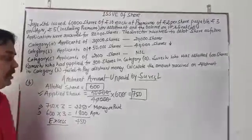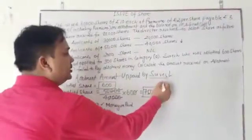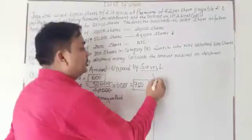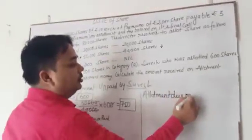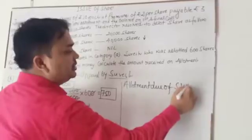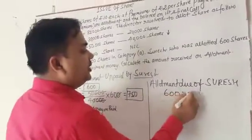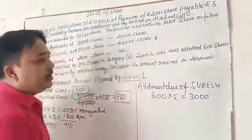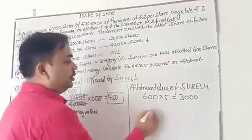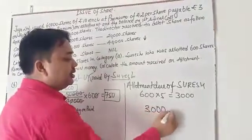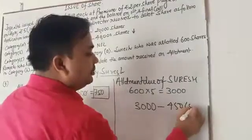Now you have to calculate the allotment amount due for Suresh. Simply: 600 multiplied by 5 equals 2,000 — that is the allotment amount due. You got 2,250 paid and 1,800 utilized, so excess is 450. To calculate the unpaid amount, you subtract: allotment due 2,000 minus excess application money 450. That gives the unpaid amount.